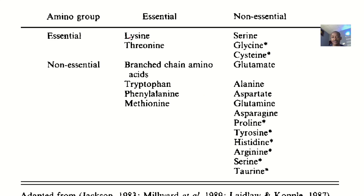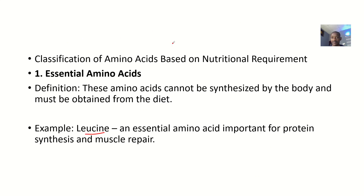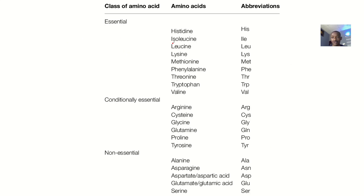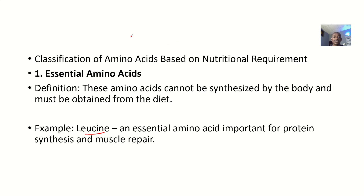Here we have a more comprehensive view — essential, conditionally essential, and non-essential — in case you want to look at them all again. So, starting with nutritional requirements: essential amino acids are amino acids that cannot be synthesized by the body, so they must be obtained from the diet.